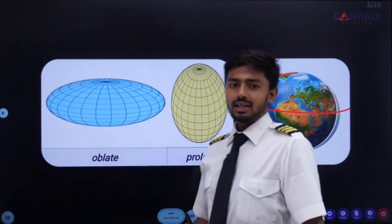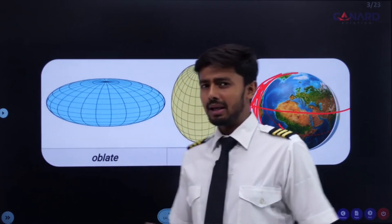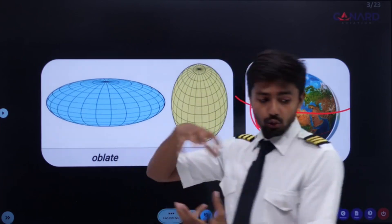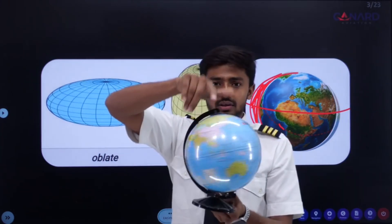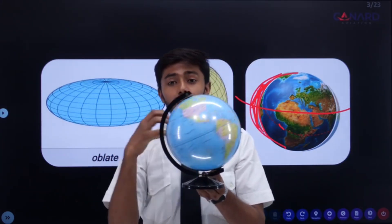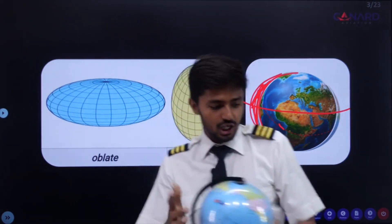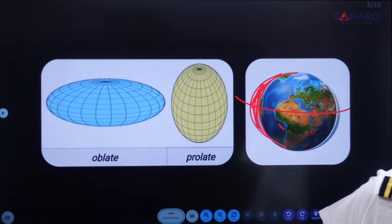Why is it so? Because inside the core of the Earth, there's a lot of molten minerals, lava, magma. And our Earth is rotating on its own axis. Because of this rotation, because of the centrifugal forces, all the magma, lava, and minerals inside the core tend to be thrown outward. And because of that, the Earth has bulged out around the equatorial axis.